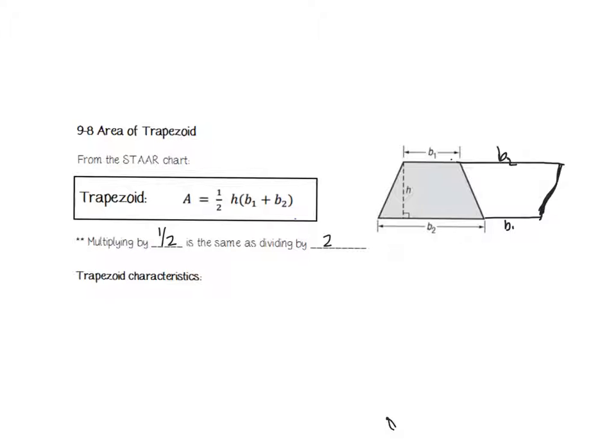Trapezoid characteristics are that they have one set of parallel lines. So if they had two sets, they would be a parallelogram. If they were 90 degree angles, they would be a rectangle or square. So this one set of parallel lines means that if I were to extend these two out, they would never meet. That means there has to be two of them, like a pair of shoes has two shoes.